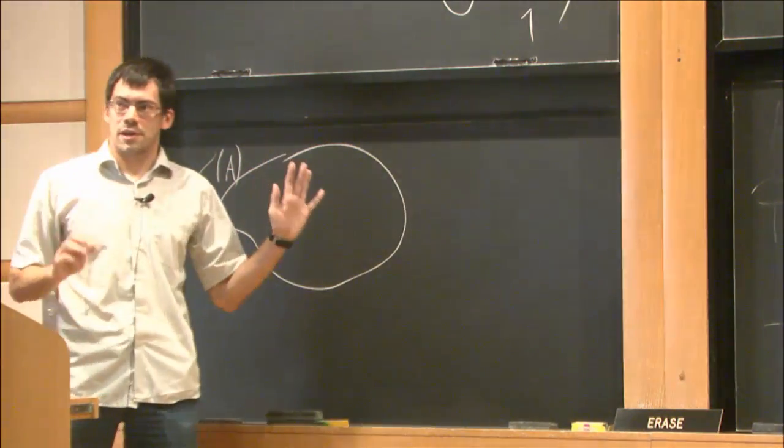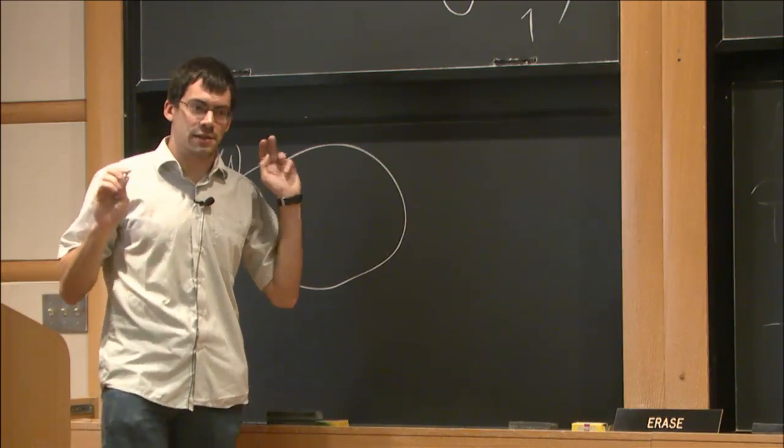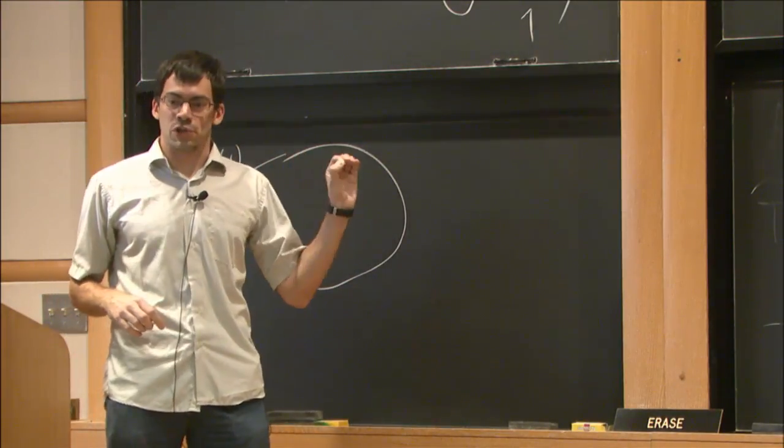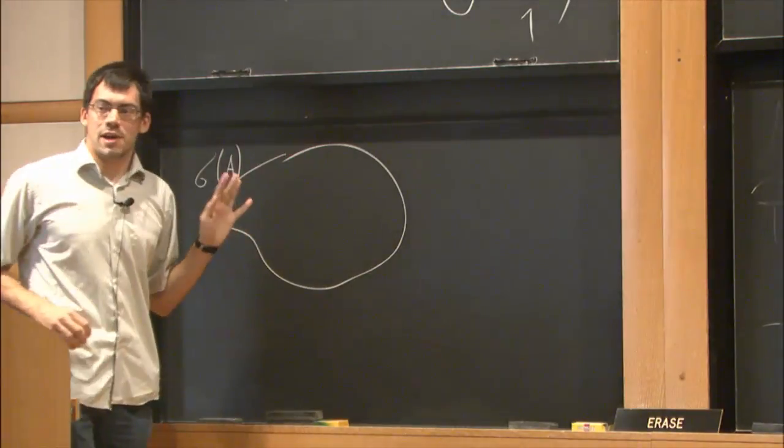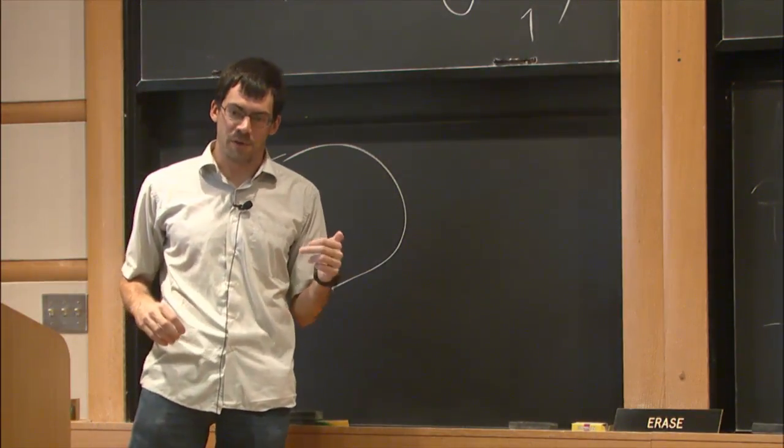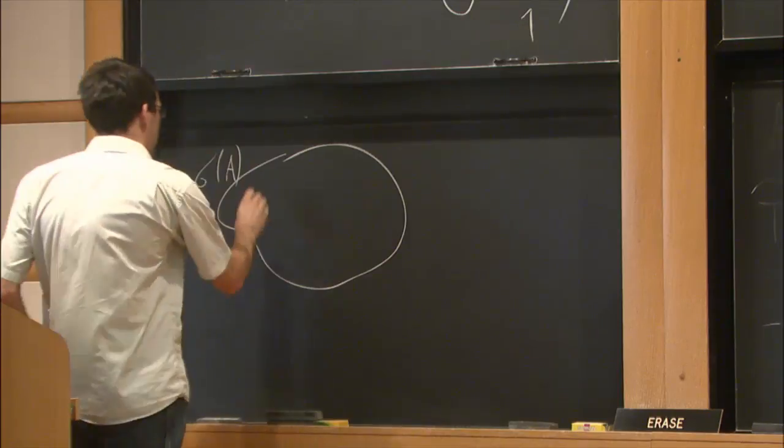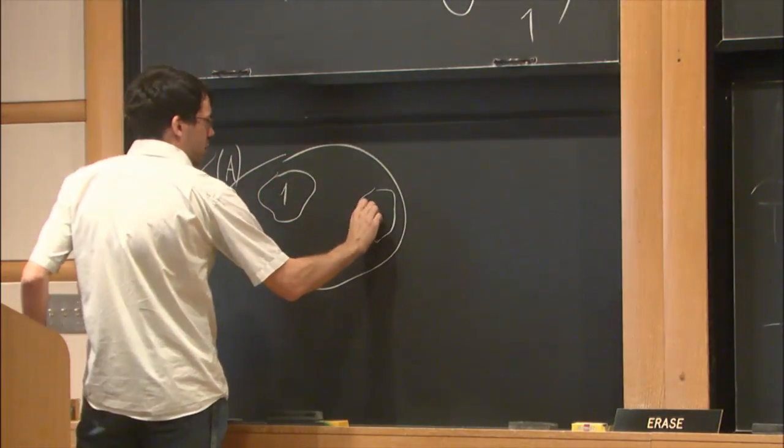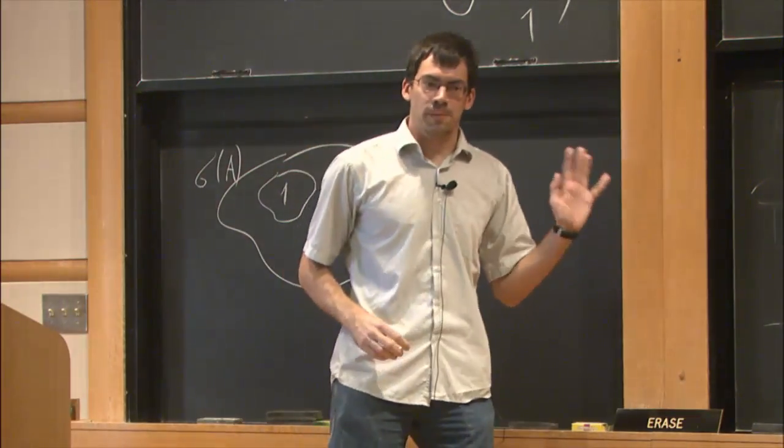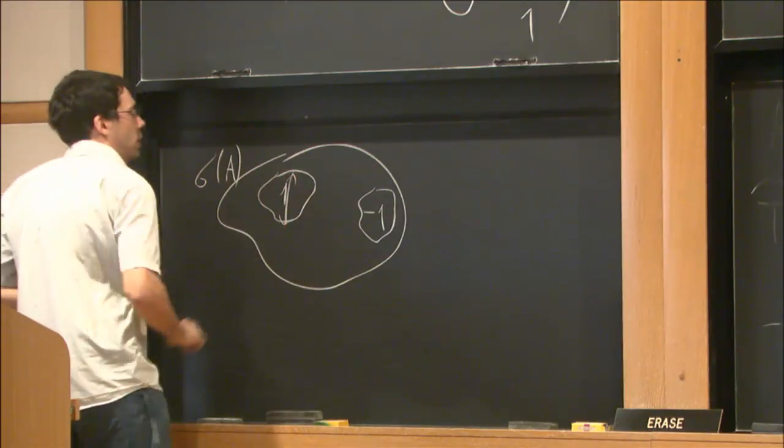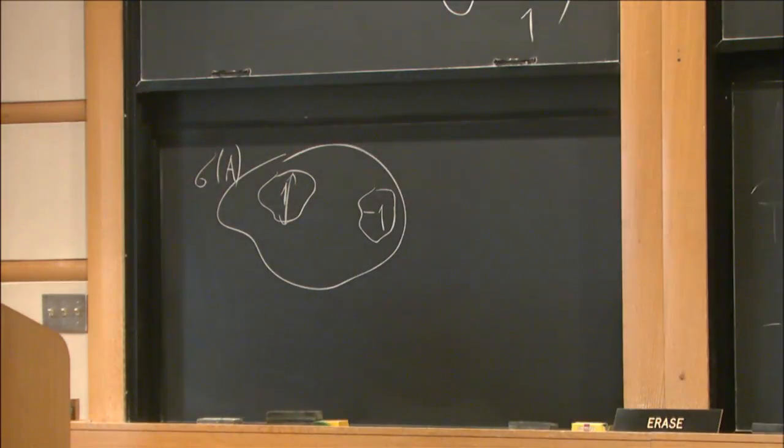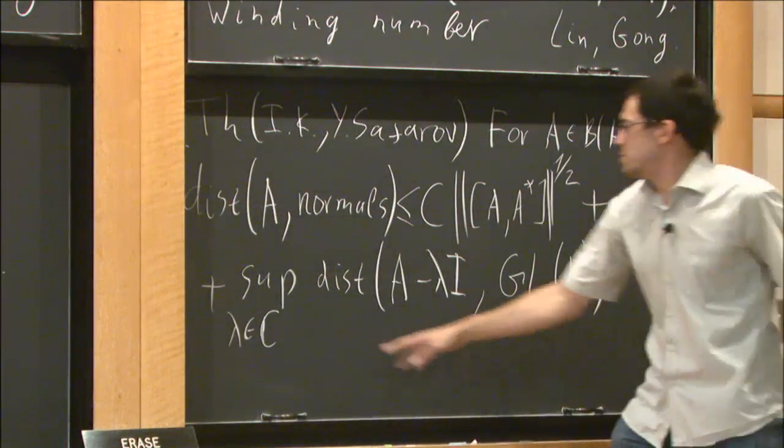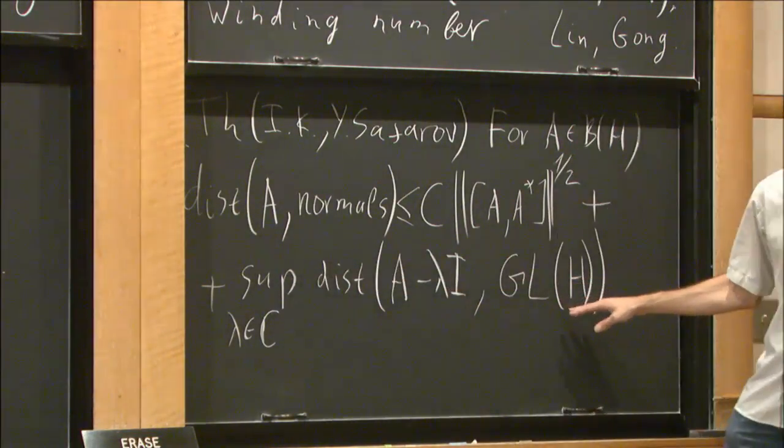Let's say there are two spots on which Fredholm index is not zero. Then the right hand side will be basically of the order of the size of these spots. This result allows you to tell something even if the Fredholm index is not zero but has small support. So it's like a quantitative version. It also cannot be improved because there is a lower bound of the same type.